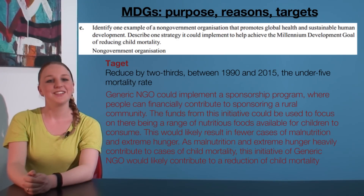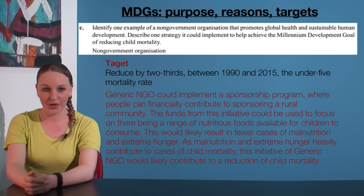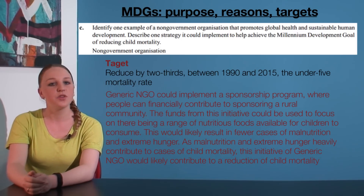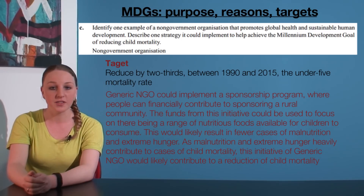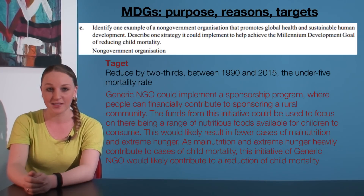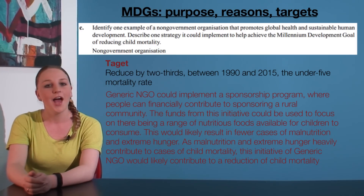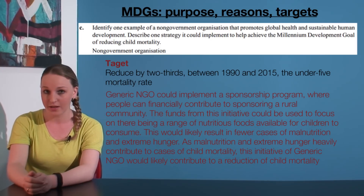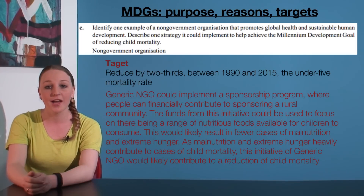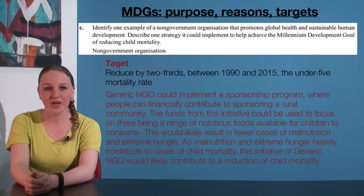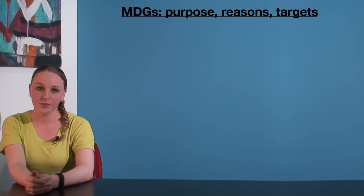For example, Generic NGO could implement a sponsorship program where people can financially contribute to sponsoring a rural community. The funds from this initiative could be used to focus on there being a range of nutritious foods available for children to consume. This would likely result in fewer cases of malnutrition and extreme hunger. As malnutrition and extreme hunger heavily contribute to cases of child mortality, this initiative of Generic NGO would likely contribute to a reduction of child mortality.